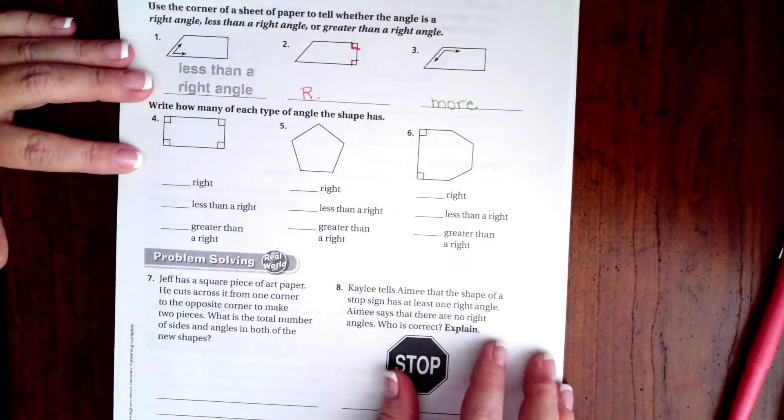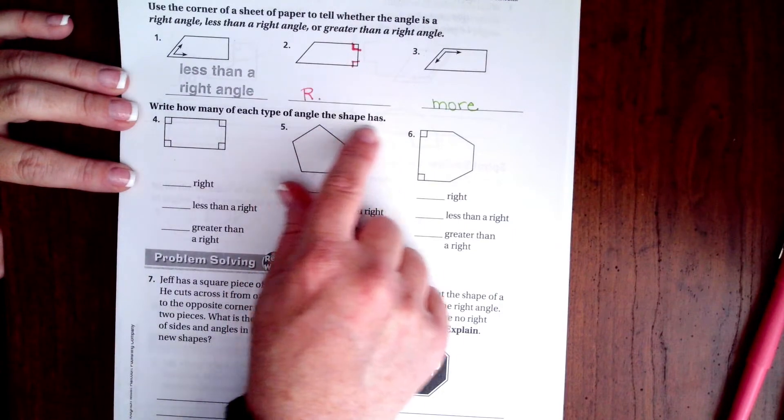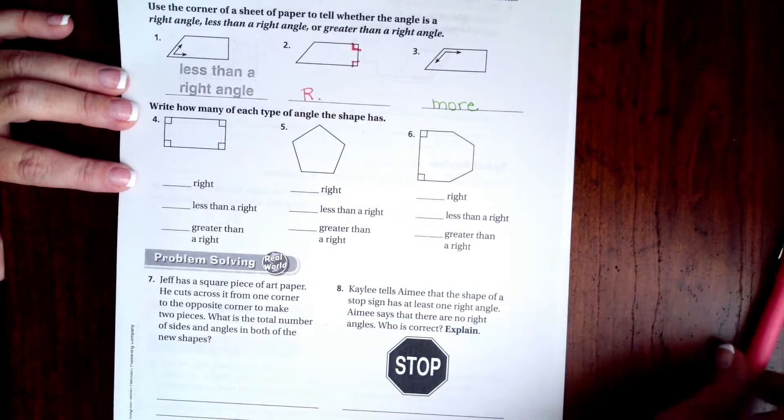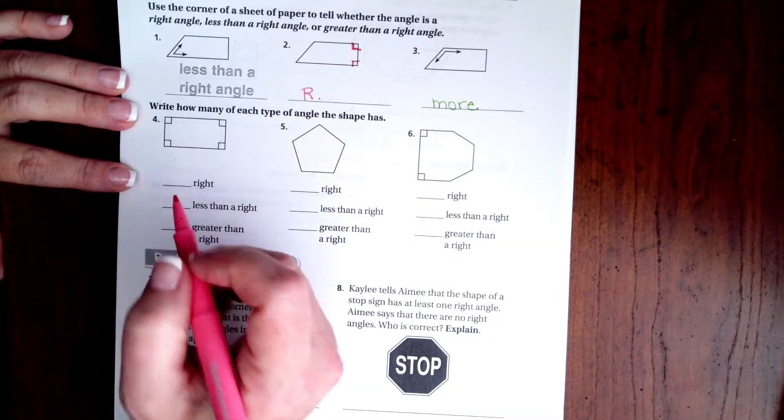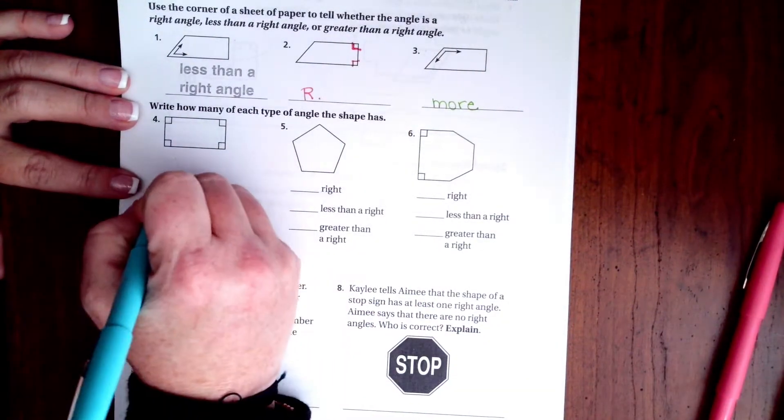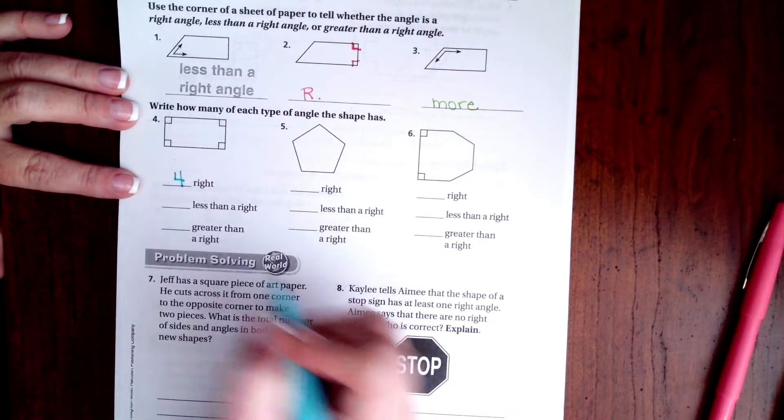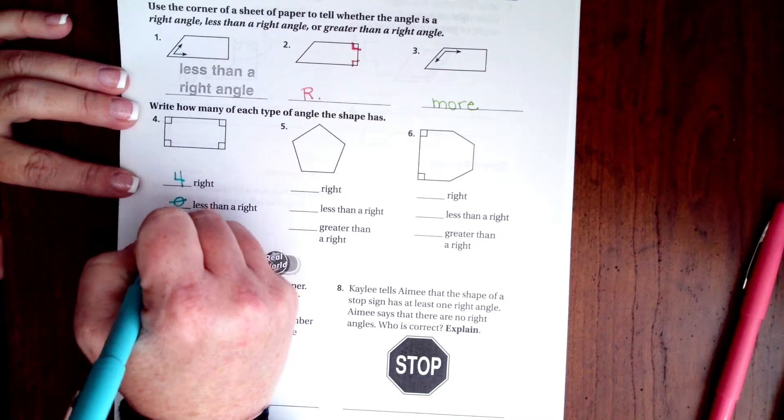This one says write how many of each type of angle this shape has. Well, this one has one, two, three, four boxes, so that is going to be four right angles, which means there are no other angles.